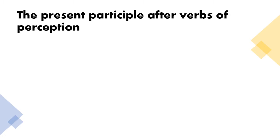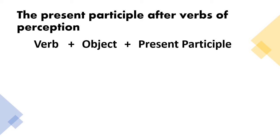It is also used after verbs of perception. The pattern for this usage is verb plus object plus present participle. Take note that there is a difference in meaning when such a sentence contains a zero infinitive rather than a participle.